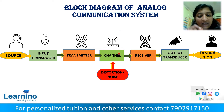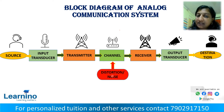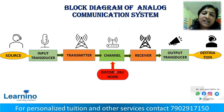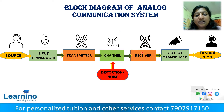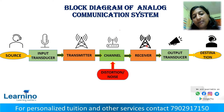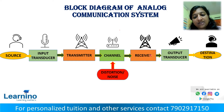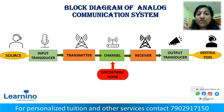There are different types of channels. On the receiver side, we have distortion, noise, interference, and signal effects. Then in the receiver section, we have a receiving antenna. On the transmitter side we have modulation, and on the receiver side we have demodulation. Then the signal goes to the output transducer.